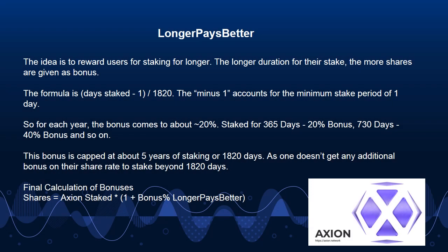Longer Pays Better: The idea is to reward users for staking longer. The longer the duration of their stake, the more shares are given as a bonus. The formula is: days staked × 1/1820. The minus 1 accounts for the minimum stake period of 1 day. For each year, the bonus comes to approximately 20%. So 365 days yields a ~20% bonus, 730 days yields a ~40% bonus, and so on. This bonus is capped at about 5 years of staking, or 1820 days — one doesn't get any additional bonus on their share rate beyond 1820 days.